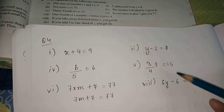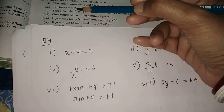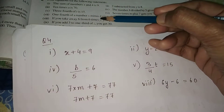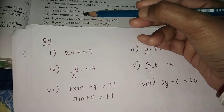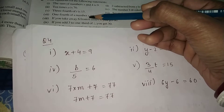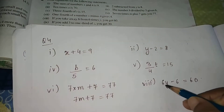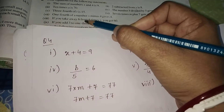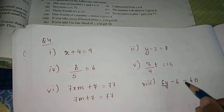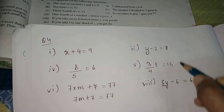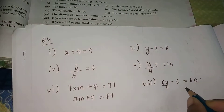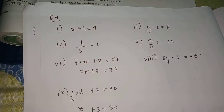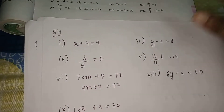Number 8: if you take away 6 from 6 times y, you get 60. '6 times y' is 6y, and subtracting 6 from it gives 6y − 6 = 60. That is the equation.